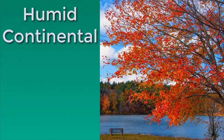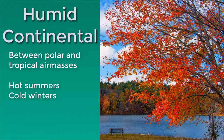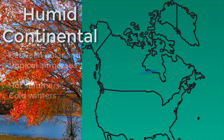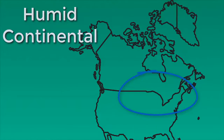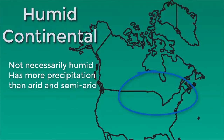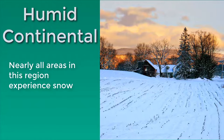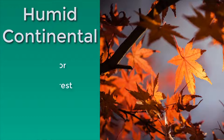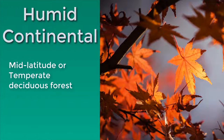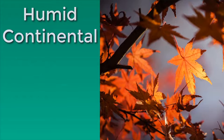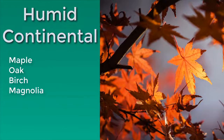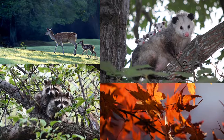The humid continental climate region exists between polar and tropical air masses and is marked by hot summers and cold winters. New England, southern Ontario, Quebec, and much of the American Midwest are located in this region. Humid is a bit of a misleading name — it's not necessarily humid, it just has enough precipitation not to be considered arid or semi-arid. Almost all areas within this region experience snow at some point during the year. The prevailing ecosystem here is the mid-latitude deciduous forest, also known as the temperate deciduous forest, home to hardwoods like maple, oak, birch, and magnolia, and animals like the white-tailed deer, raccoon, opossum, and porcupine.